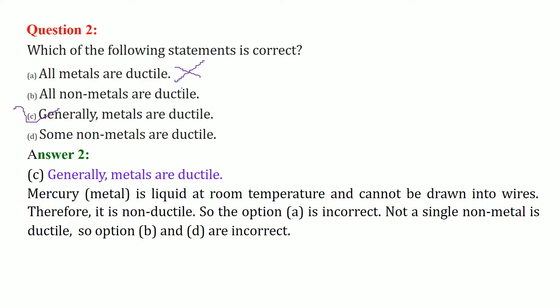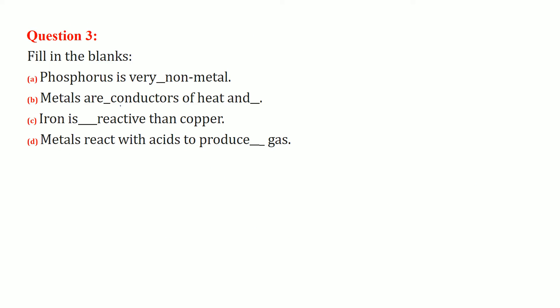Option A, all metals are ductile, becomes incorrect. Not a single non-metal is ductile, so options B and D are obviously rejected. We choose generally metals are ductile.